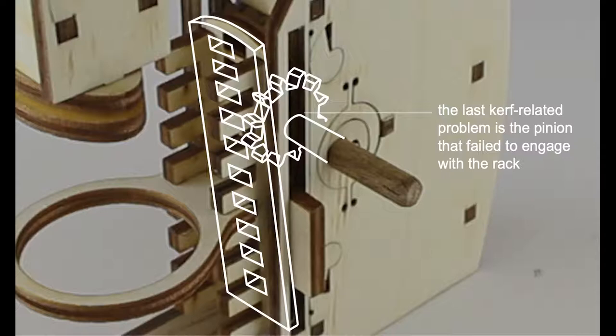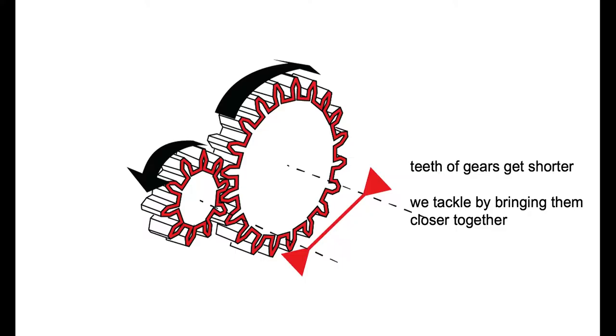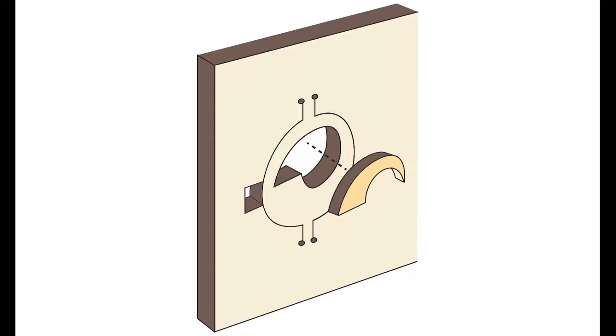The last kerf-related problem is the pinion that failed to engage with the rack. So the problem is the same as with a pair of gears. The teeth got smaller and therefore further away from one another. While we cannot quite insert additional geometry in the teeth themselves, what we can do is bring the gears closer to one another so they still engage with each other.